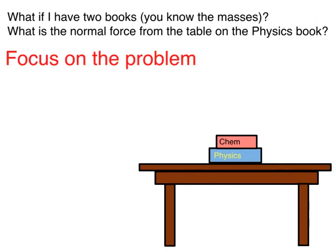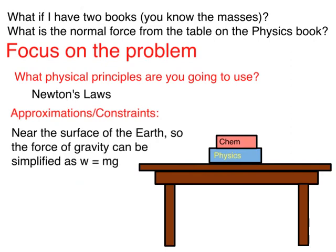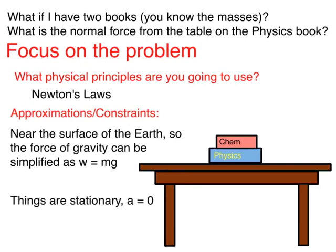For this, let's use our problem-solving worksheet, beginning with focus on the problem. The first question is what physical principles are you going to use? Here we're talking about forces, so Newton's laws are the physical principles we should be using. Now let's look at the approximations or constraints. Both objects are on top of a table that's not very tall relative to the radius of the Earth, so we can simplify the force of gravity to just mg. Also, everything is stationary, so another constraint is that the acceleration of both objects has to be equal to zero.